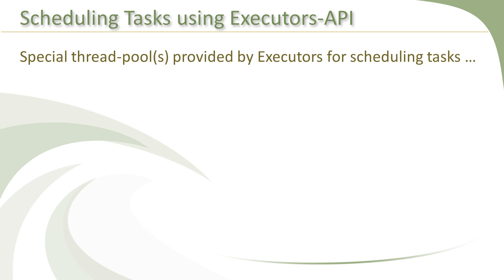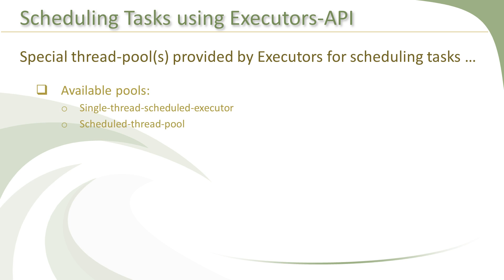If we need to schedule tasks for executing at some specific time in the future, then we need to use any of the two additional thread pools provided by the executors factory class: the single thread scheduled executor and the scheduled thread pool. As the names specify, the first one executes scheduled tasks using a single thread only, while the second one can have multiple threads for the same. So technically the first one is not a pool.